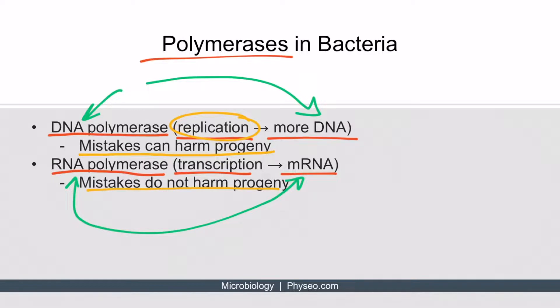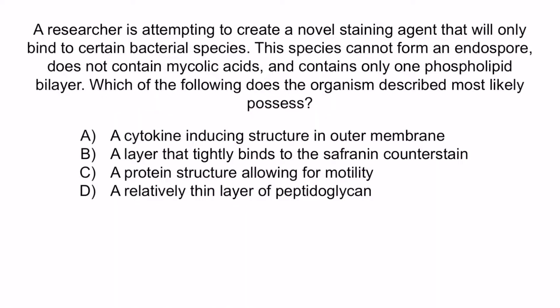Now that we've covered all the bacterial structures you need to know for Step 1, let's review with a question. A researcher is attempting to create a novel staining agent that will only bind to certain bacterial species. This species cannot form an endospore, it does not contain mycolic acids, and contains only one phospholipid bilayer. Which of the following does the organism described most likely possess? A. A cytokine-inducing structure in the outer membrane. B. A layer that tightly binds to the safranin counterstain. C. A protein structure allowing for motility. Or D. A relatively thin layer of peptidoglycan.